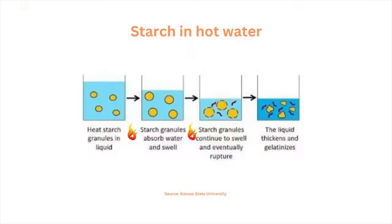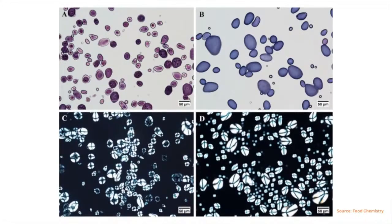Starch in hot water: during heating and in the presence of excess water, starch granules initially imbibe and bind water, causing them to gradually swell and form a viscous slurry. As heating continues and temperature increases, the granules start losing their crystallinity, becoming amorphous, as evidenced in the disappearance of the Maltese cross birefringence observed via light microscopy.